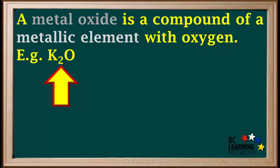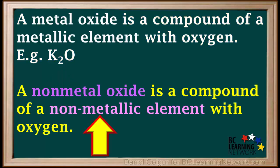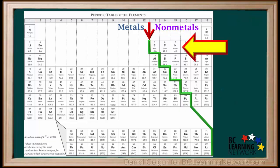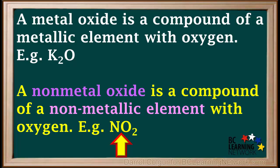A nonmetal oxide is a compound of a nonmetallic element with oxygen. For example, the element nitrogen is a nonmetal, so the compound NO2, or nitrogen dioxide, is an example of a nonmetal oxide.